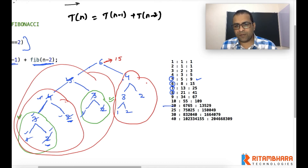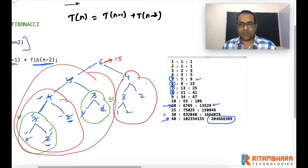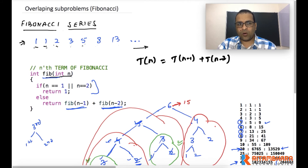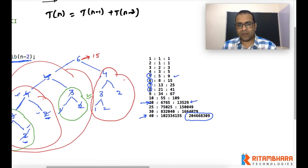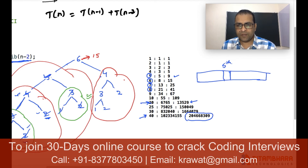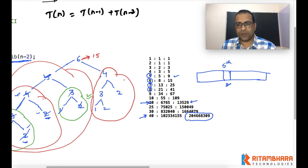For the 20th term of Fibonacci, the function is called about 13,000 times, which is very large. For the 40th term, it is called almost 200 million times — about 20 crore times. This is a huge overhead on both time and memory, entirely because of overlapping subproblems: we are computing each term again and again. If instead we store the result in a cache when a term is first computed, and reuse that stored value rather than recomputing, we can reduce the total time by a huge margin.